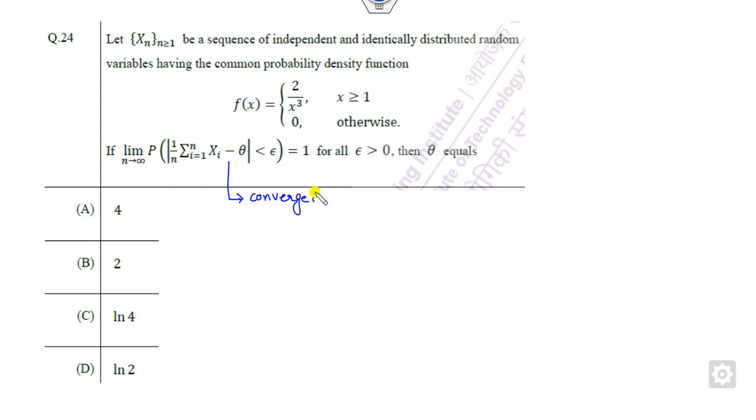If it is convergence in probability definition, what does that imply? This summation of the X_i's over n will converge to this theta in probability.